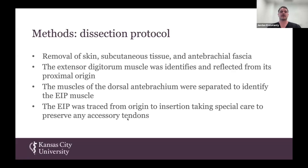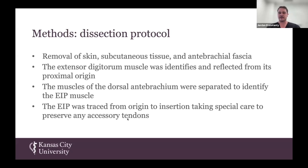For our initial dissection, superficial soft tissue was removed from the antebrachium by OMS1 students. The extensor digitorum was identified and reflected from its proximal origin. From there, the muscles of the dorsal antebrachium were separated to help identify the extensor indices, and we took care to trace them from the most proximal origin all the way to the insertion sites, taking special care to preserve all accessory muscle bellies and accessory tendons.